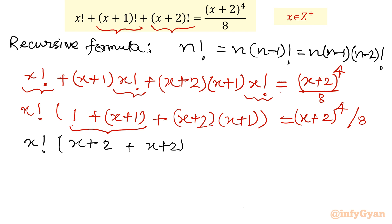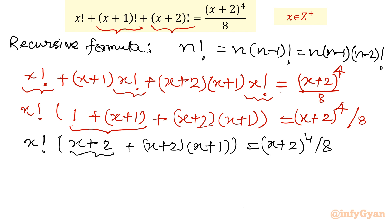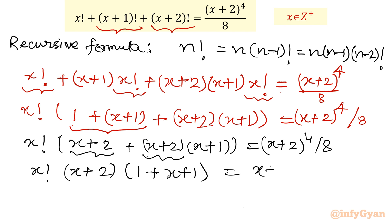Now we take (x+2) common from the bracket. What remains inside is 1 plus (x+1), which is again (x+2). So we get x factorial times (x+2) times (x+2) equals (x+2)^4 divided by 8. That gives x factorial times (x+2)^2 on the left-hand side.